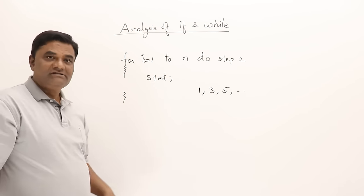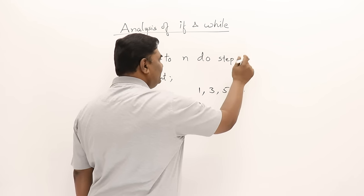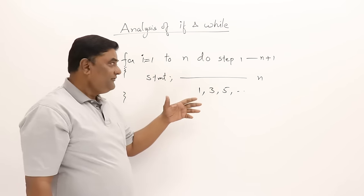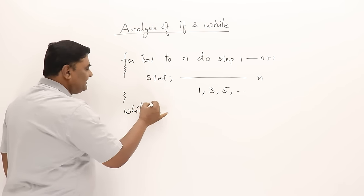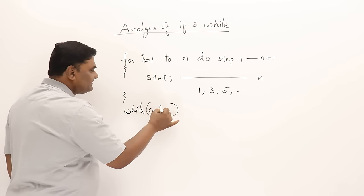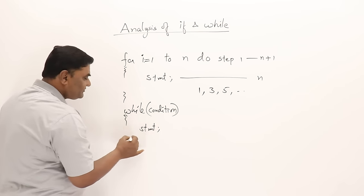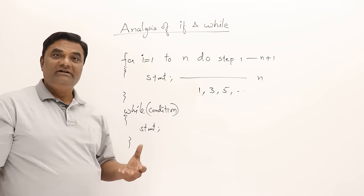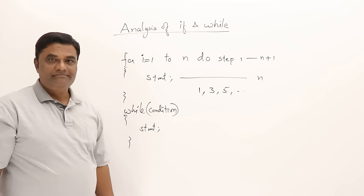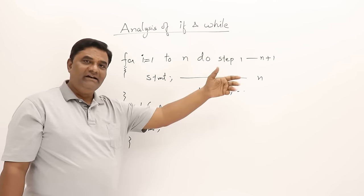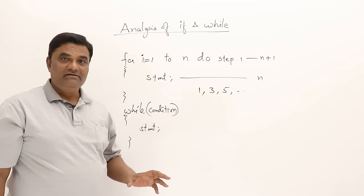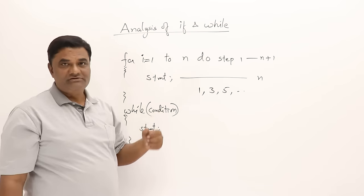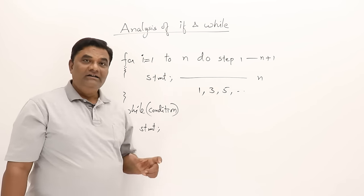When analyzing the Pascal-style for loop without a step, it executes n times and the condition checks n+1 times — this is a common result. But with a while loop in C language, we don't know what the condition is; it repeats as long as the condition is true and stops when false. So we must study the loop to find out when it stops and how many times it iterates. For the old Pascal-style for loop syntax, we can blindly say it's O(n), but for a while loop, we cannot say O(n) unless we study it thoroughly.